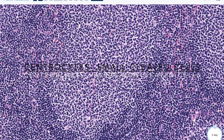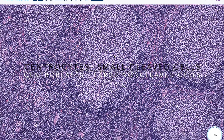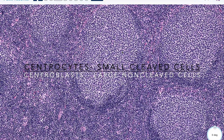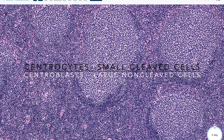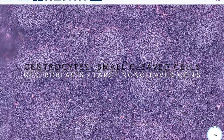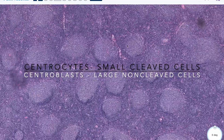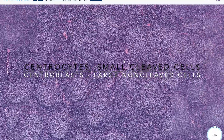So you have centrocytes that are smaller, more cleaved cells, and then centroblasts, which are larger, non-cleaved, and have nucleoli. It's important to learn how to differentiate centrocytes and centroblasts because that's actually how we grade follicular lymphoma.